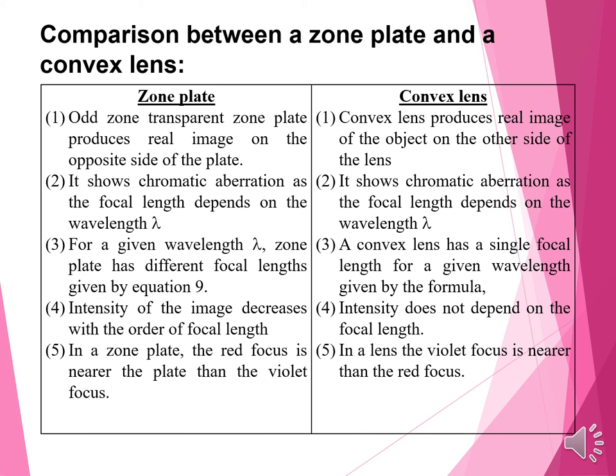A zone plate also converges the wavefront to a point, as does a convex lens, which is a convergent lens. Let us see the comparison between a zone plate and a convex lens. First: in a zone plate, odd transparent zones produce a real image on the opposite side of the plate. In a convex lens, it also produces a real image of the object on the other side of the lens.